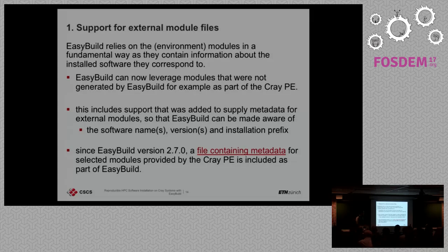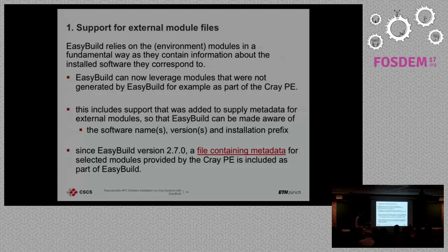The support for external module files is a key feature for Cray support. Before, EasyBuild was building everything from scratch and creating module files. On Cray, we need to reuse existing module files. There is support for a file where you map existing modules in a way that EasyBuild can read. This is needed for Cray but can also be used elsewhere if you have existing modules you want to reuse.